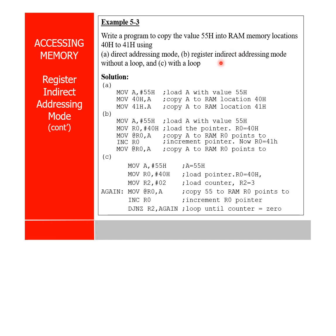First, using direct addressing: MOV A, #55H — 55H will go to A. MOV 40H, A — 55H goes to RAM location 40H. MOV 41H, A — 55H goes to 41H. So you are copying the data from the accumulator to 40H and 41H.